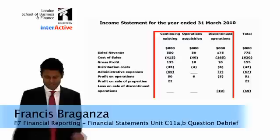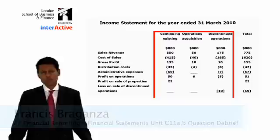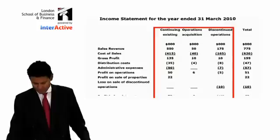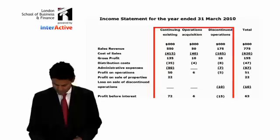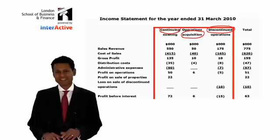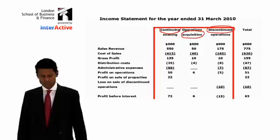Here we are. X Limited income statement, which is like a profit and loss account for the year ended 31st March 2010. There are different ways people display this — I've decided to go for the boxed approach. As you can see, you have three columns: continuing, acquisition, and discontinued. Those are the three basic columns — continuing, acquisitions, and discontinued, or CAD if you prefer.